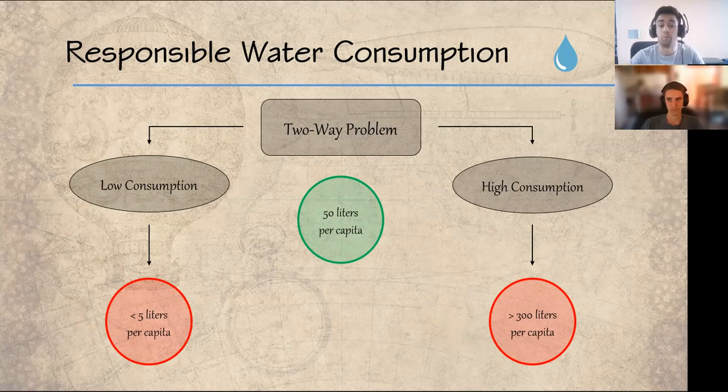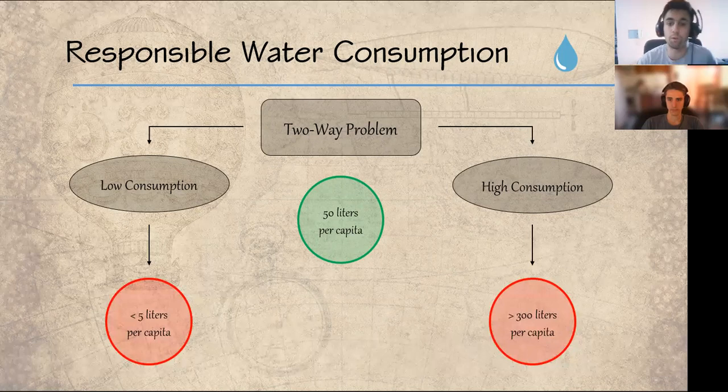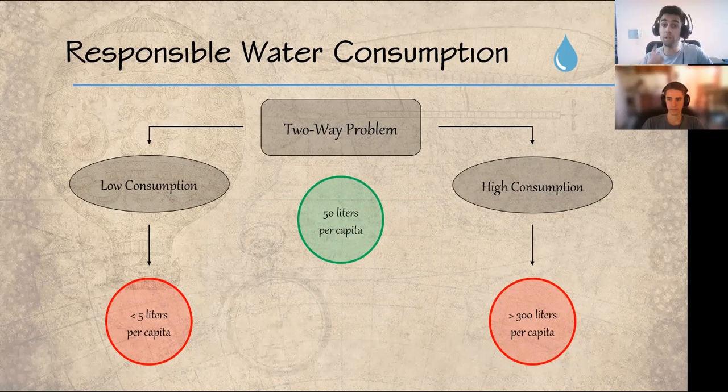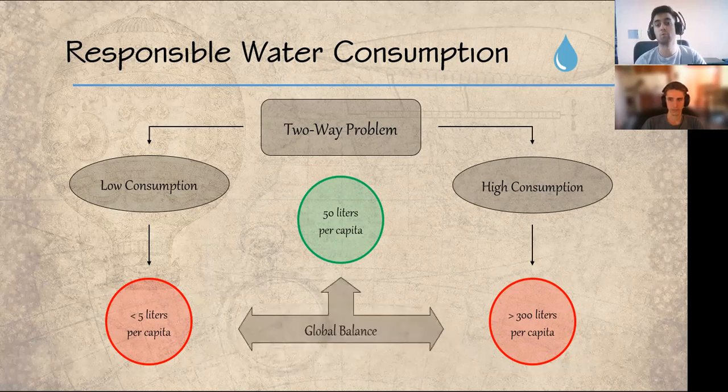In contrast with this, there are other places where drinking water is very easily accessible and it costs too much. For example, in the United States, the average of drinking water per person consumption only for domestic use is greater than 300 liters. For this reason, one of the most important sustainability developing goals for global engineering is to achieve a global balance in the consumption of drinking water.